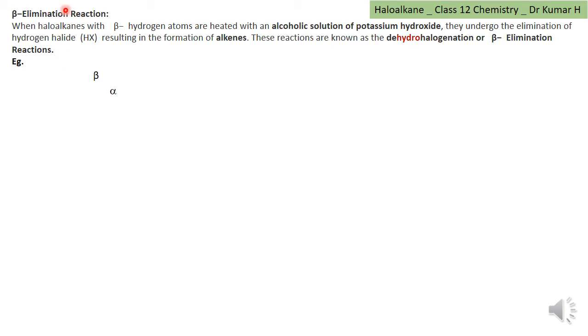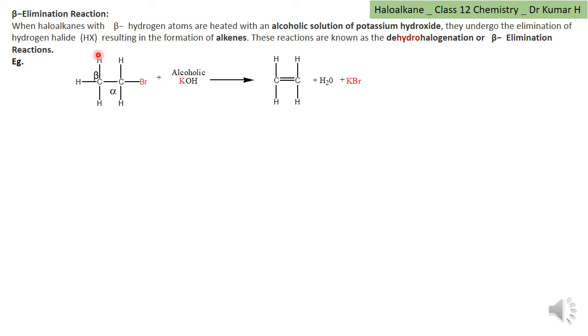Let us study beta elimination reaction happening in haloalkane. What is beta elimination? If you take an example of haloalkane, that is ethyl bromide, the halogen connected to the carbon is said to be on the alpha carbon. This is alpha carbon. The next carbon connected to it will be beta carbon — carbon next to alpha is beta.